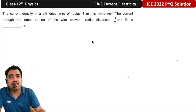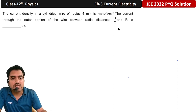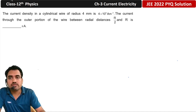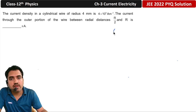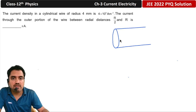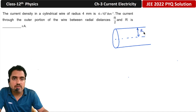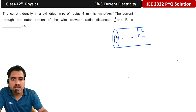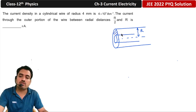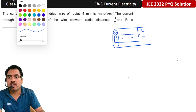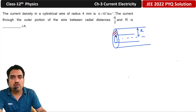First of all, if we draw this structure, we can understand that this is the cylindrical wire and the radius R is given. This is the axis. The outer portion from R/2 to R is the region of interest. We shade this outer portion to identify the cross-sectional area through which current passes.